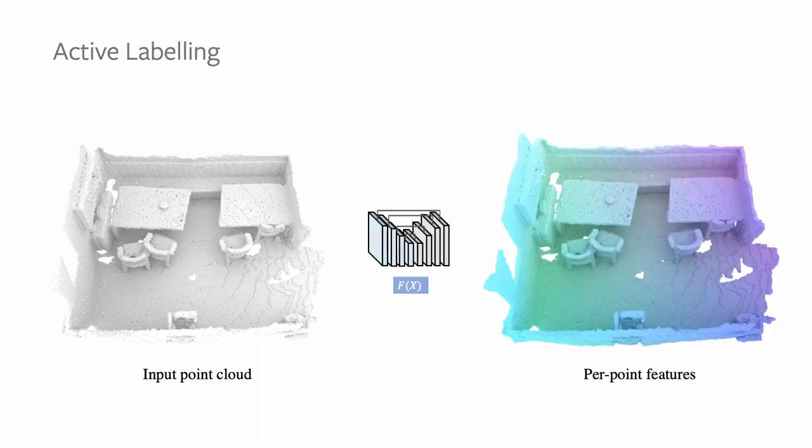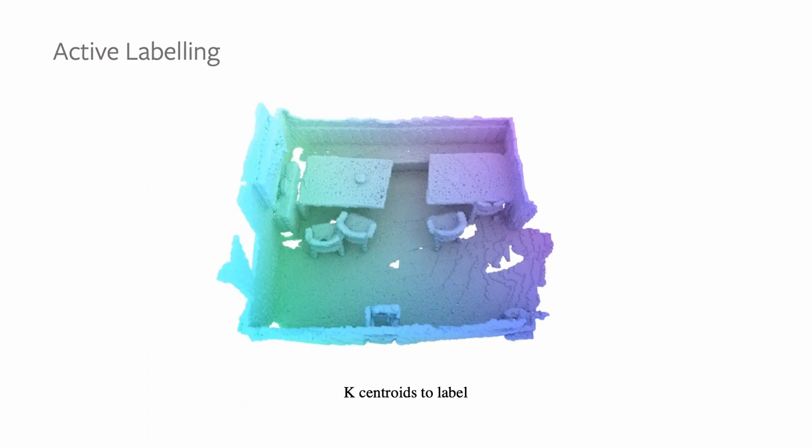We also propose an active labeling strategy. We use our pre-trained network to extract features for each point. K-means clustering leads to K-centroids, which are labeled.